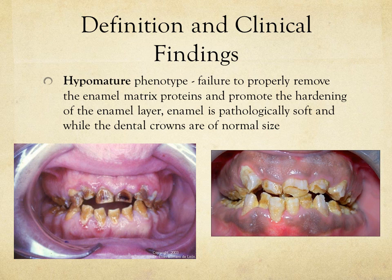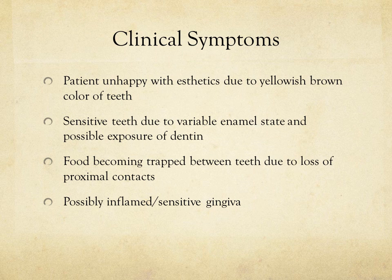The next phenotype is hypomature, which is a failure of the enamel matrix proteins to promote the hardening of the enamel layer. You see the structure but it has a brown color due to lack of radio-opaque enamel, with mainly dentin structure visible. There is a general loss of proximal contacts, decreased size of anatomical crowns, decreased cusp height, and flattening of the tooth.